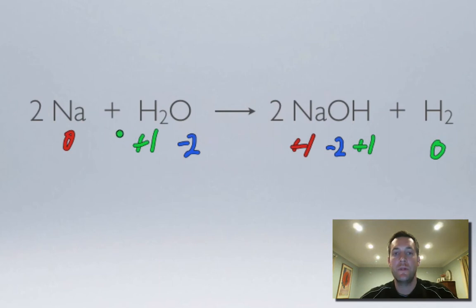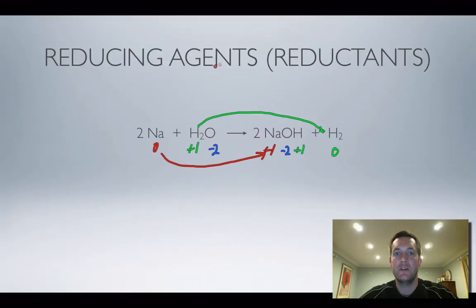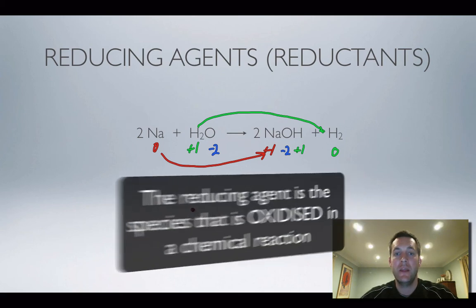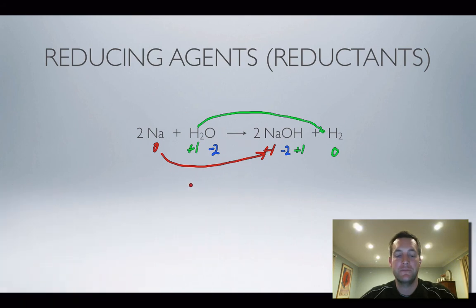So what's been reduced? Well, the hydrogen has. The hydrogen's gone down from plus one to zero. And you can see that the sodium has gone up. Now, because the sodium reduced the hydrogen, the sodium was the reducing agent, the one that did the reducing. So an agent is someone who does something. A reducing agent is someone who does the reducing. And the reducing agent will always be oxidised. So because the sodium has gone up in oxidation number, it's been oxidised. It's the reducing agent.